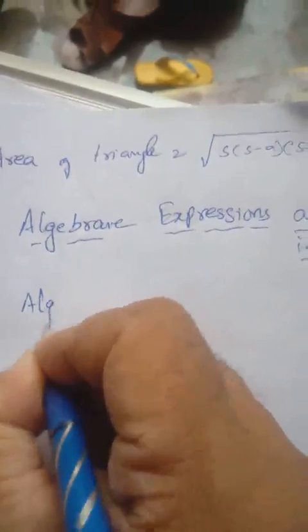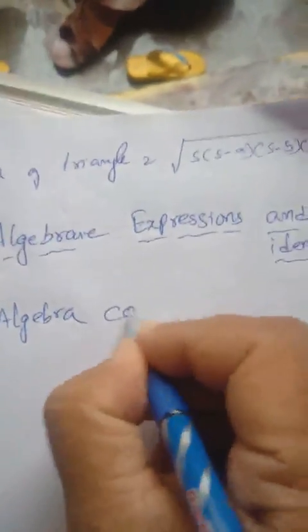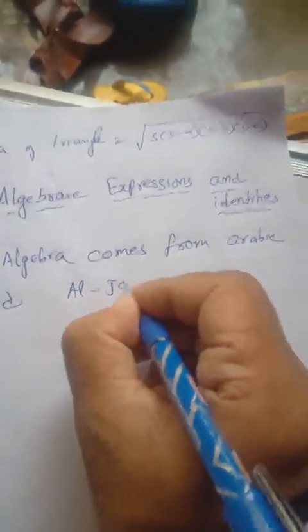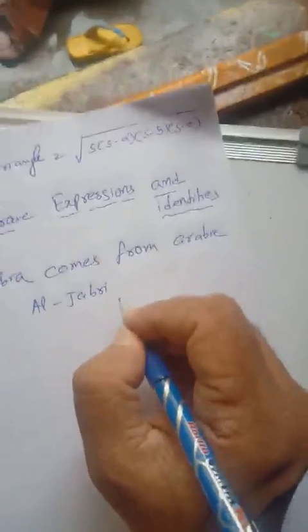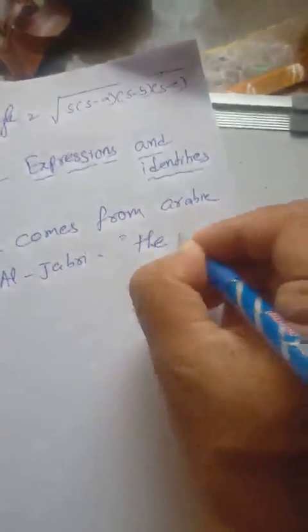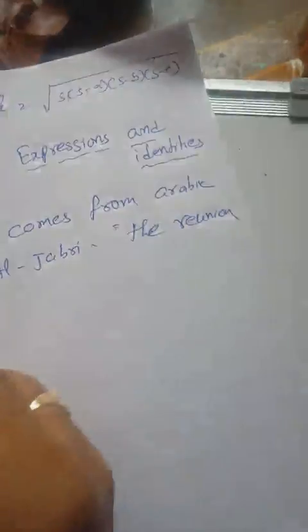The word algebra comes from an Arabic word. Algebra — spelled A-L-J-A-B-R-I — means 'the reunion of broken parts.'